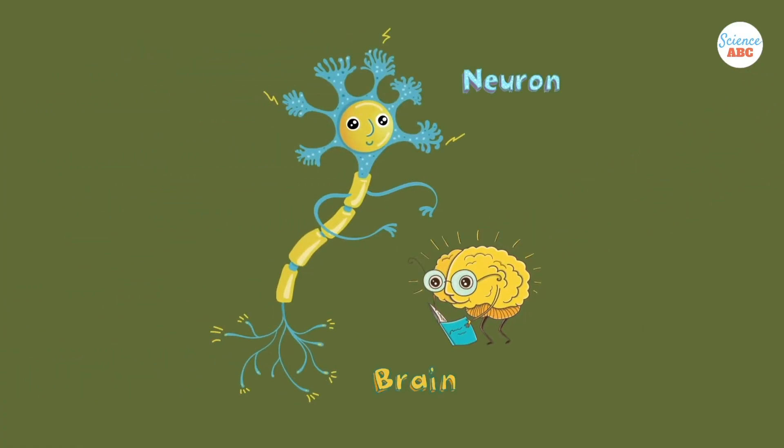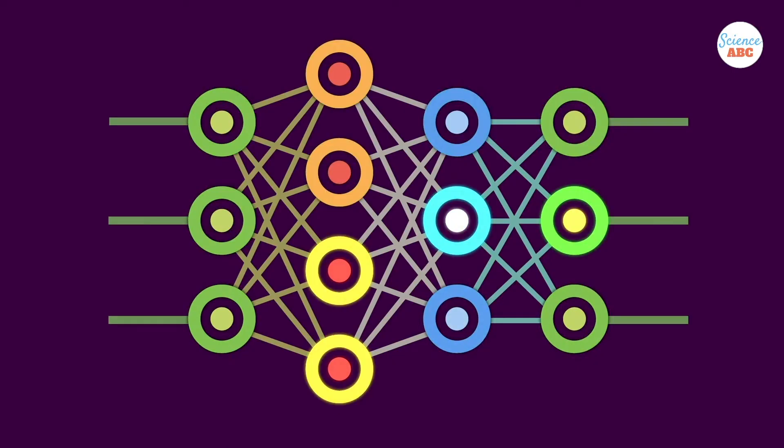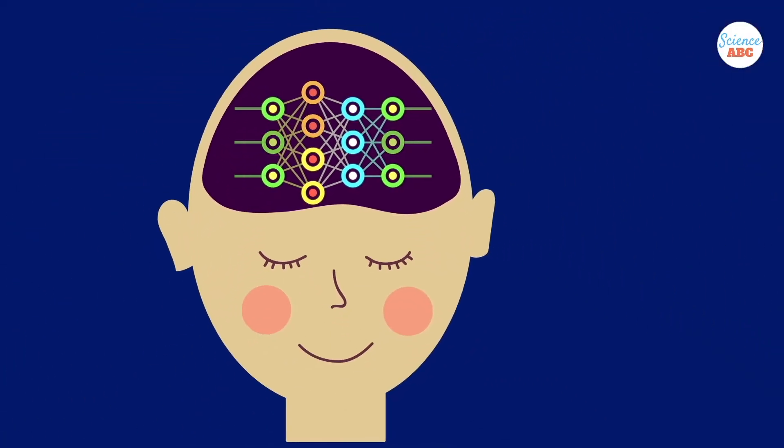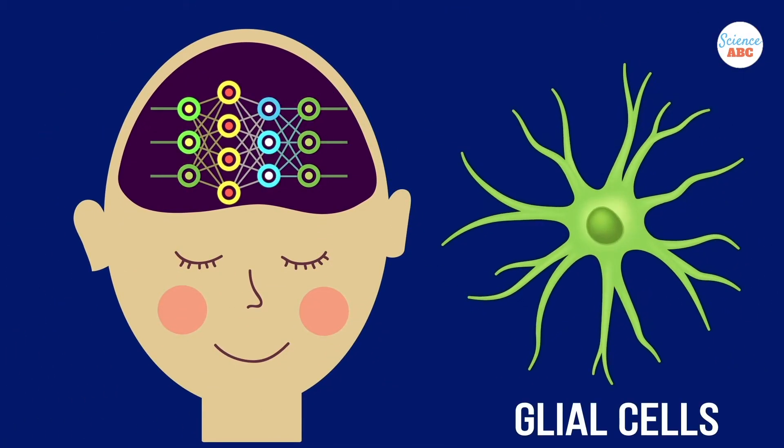However, neurons alone aren't capable of making our brains work like they do. They carry the information of the nervous system, yes, but to see the whole picture, you need to consider the other cells of the brain: the glial cells.